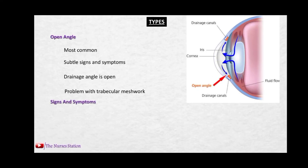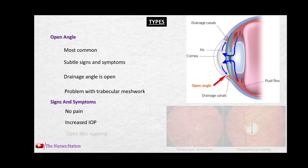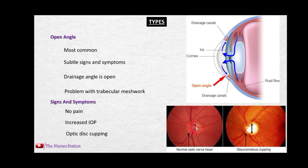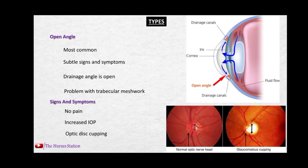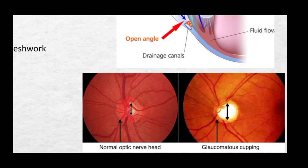Signs and symptoms of open angle glaucoma: there is no pain — the patient doesn't usually feel pain in this type. There is increased intraocular pressure due to the build-up of extra fluid. There may also be optic disc cupping, which is the thinning of the optic disc, seen as an excavated or cupped area.